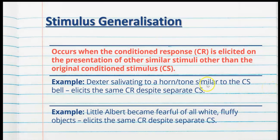Stimulus generalisation occurs when the conditioned response is elicited on the presentation of other similar stimuli, other than the original conditioned stimulus. For example, Dexter salivating to a horn or a tone similar to the original conditioned stimulus of the bell — if it elicits the same conditioned response, that is generalisation. The dog has generalised his response to anything similar to the original bell, such as a doorbell or different bell tone. If he salivates to all bell-sounding noises, that shows he has generalised his response.